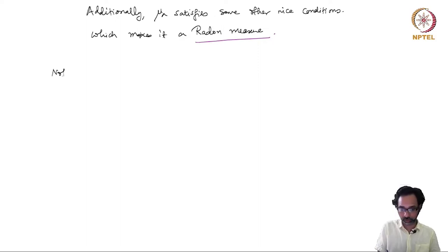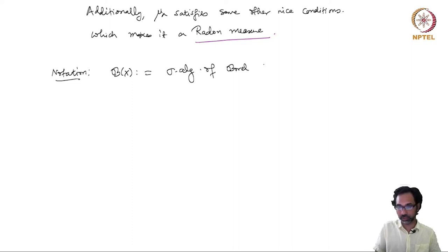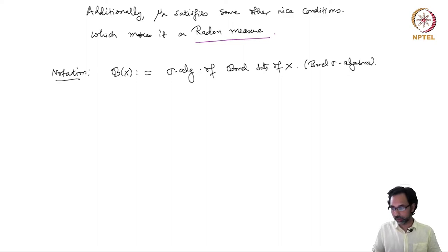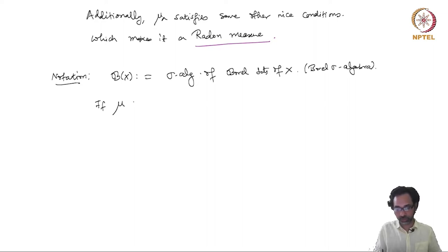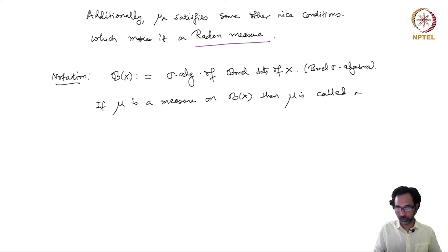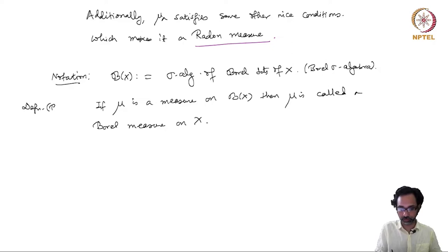First, let me fix some notation. B_x is the sigma algebra of Borel sets of x, called the Borel sigma algebra. If mu is a measure on the sigma algebra of Borel subsets, then mu is called a Borel measure on x.